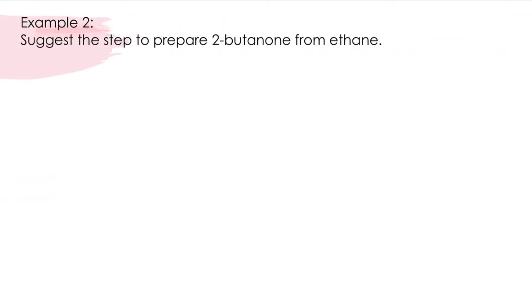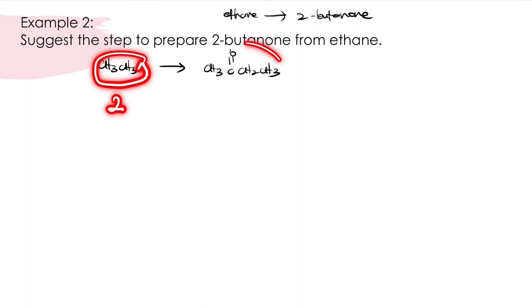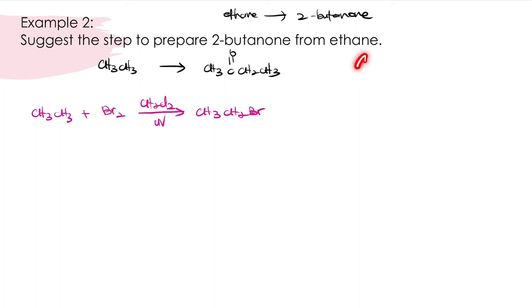Example 2: Suggest the step to prepare 2-butanone from ethane. So ethane will be our starting material, and we want to prepare 2-butanone. Ethane has molecular structure CH3CH3, whereas 2-butanone is CH3C=O-CH2CH3. As you can see, ethane has 2 carbons and 2-butanone has 4 carbons, so along the way we will use Grignard reagent to add carbons. We know alkane can only undergo halogenation, so we do halogenation reaction first to produce haloalkane. From this haloalkane, we react it with magnesium in dry ether to produce our Grignard reagent.